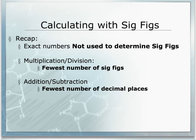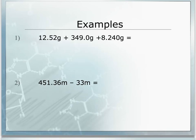A quick recap on calculating with sig figs: exact numbers are things that won't change, usually conversions, so we do not use them to determine sig figs. For multiplication and division, look at the fewest number of sig figs in the measurements being calculated — that smallest number determines the sig figs in the final answer. For addition and subtraction, look at the fewest number of decimal places. All of these are important as all calculations this year will involve measurements and sig figs must be accounted for.